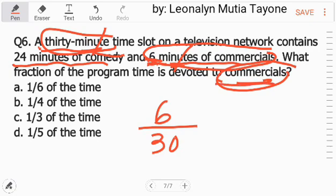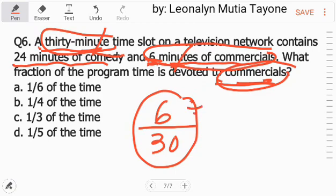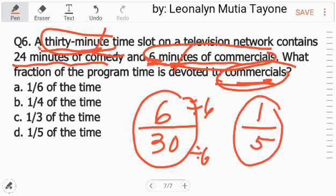What fraction of the program time is devoted to commercials? So, 6 over 30. I-simplify natin by finding the greatest common factor. Ang greatest common factor nito ay 6. So i-divide natin ng 6. 6 divided by 6 is equals to 1. 30 divided by 6 is equals to 5. So ang answer dito ay 1/5 — letter D.